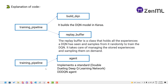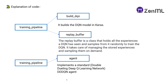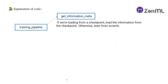The agent step implements a standard double dueling DQ learning network — DDDQN. We highly recommend checking out the code in model.py. This agent step implements a standard double dueling DQ learning network — DDDQN agent — which will learn to solve Atari games. It uses the build DQN network to build a double dueling DQ learning network. You can learn about the step-by-step code in the Medium blog.